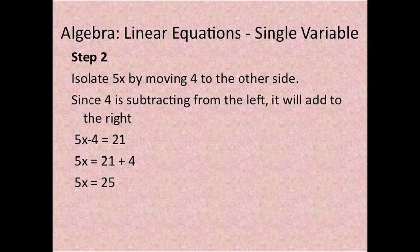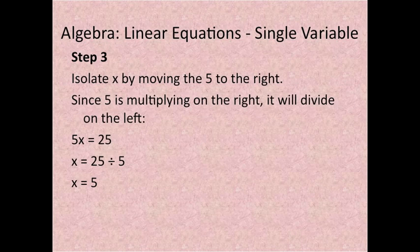Then you have 5x equals 25. Step 3: Isolate x by moving the 5 to the right. Since 5 is multiplying on the right, it will divide on the left. So 5x equals 25. x equals 25 divided by 5. And you have x equals 5.